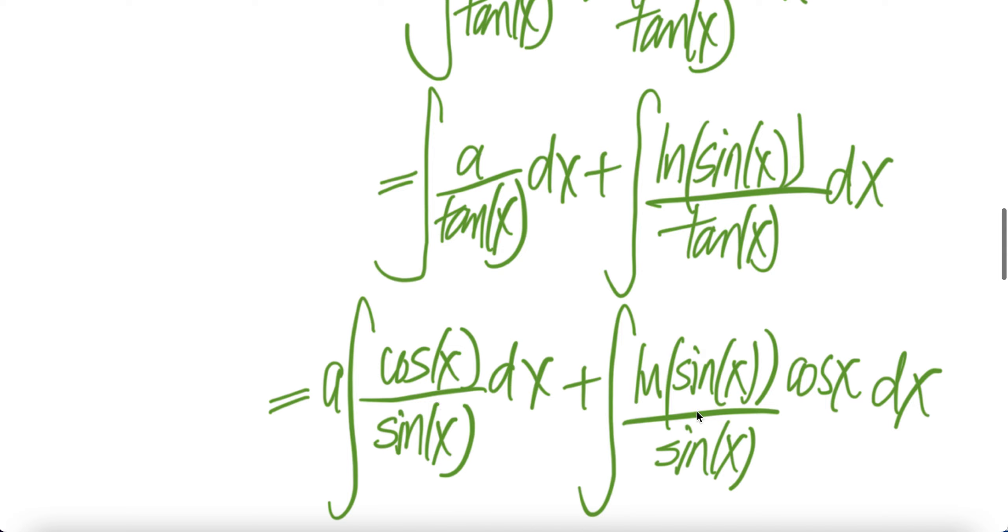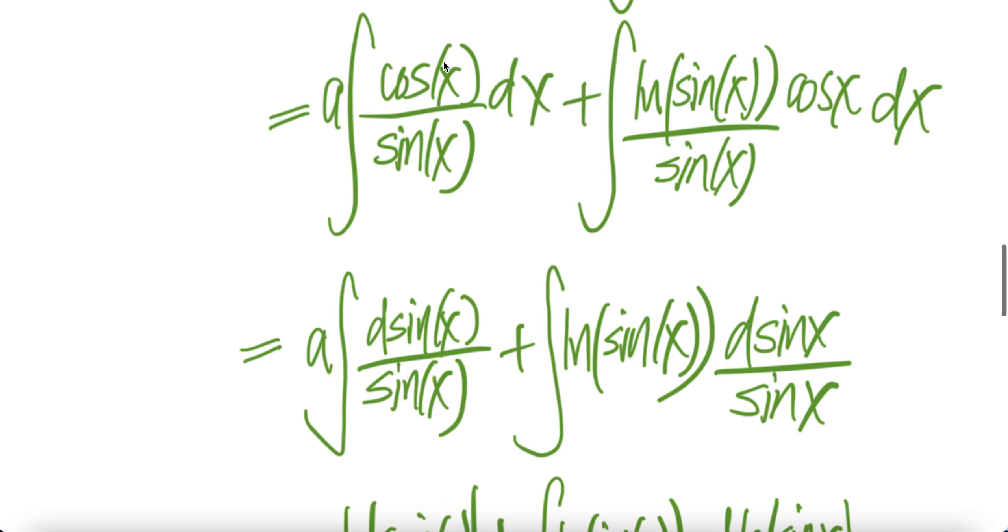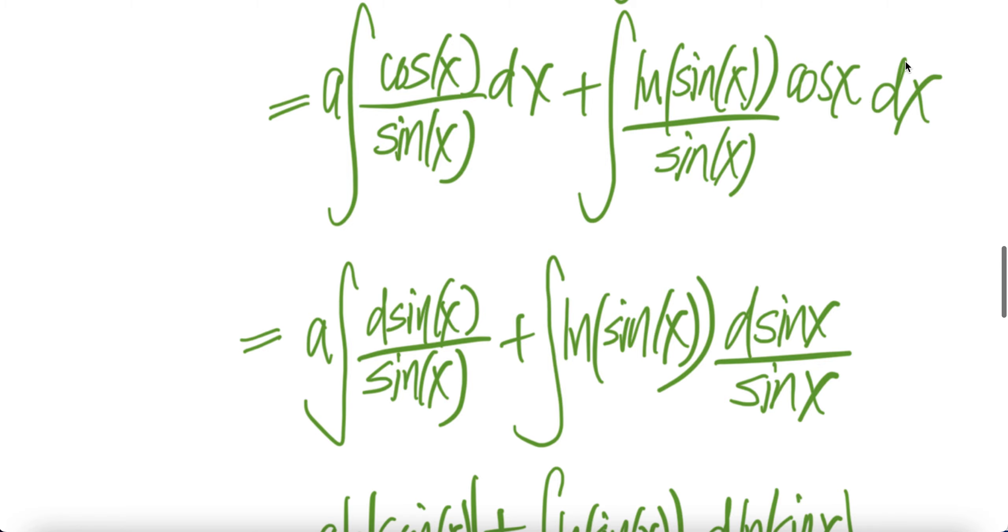Here you can write tangent as sine x divided by cos x, cos x over. Now push this into dx, the d sine x is cos x dx, you get the d sine x is cos x dx.